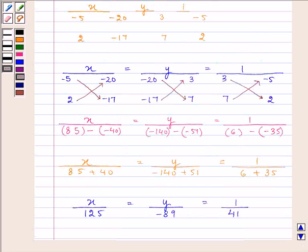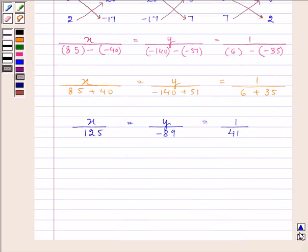Now, to obtain the value of X, Y, we will equate the first expression, that is, X divided by 125 with the third expression, that is, 1 divided by 41. And similarly, the second equation, that is, Y divided by minus 89 will be equated to the third expression again, that is, 1 divided by 41.